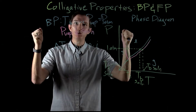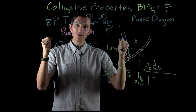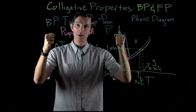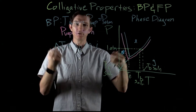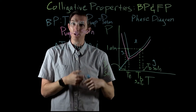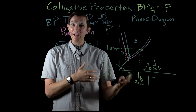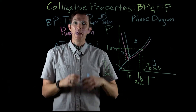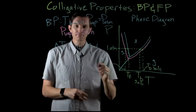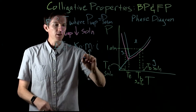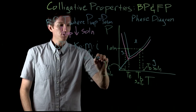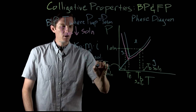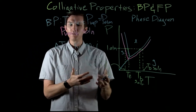If we dissolve one mole of sodium chloride, it breaks up into two pieces — a chloride ion and a sodium ion — so we get two moles of solute particles. The Van't Hoff factor would be two. We relate it to the number of pieces the compound breaks into when dissolved.